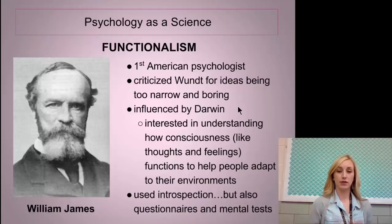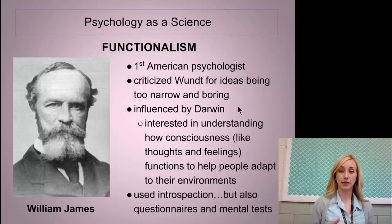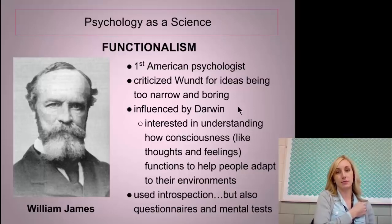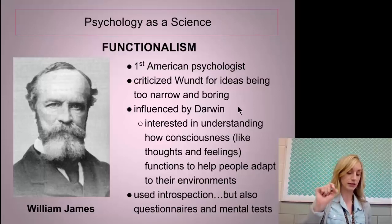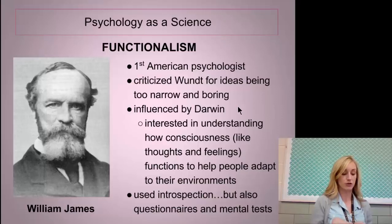As psychology developed more, they came up with functionalism — another big perspective. William James was the first American psychologist. He criticized Wundt for his ideas being too narrow and boring. He was influenced by Darwin and used introspection, as well as questionnaires and mental tests. With functionalism, he wanted to look at the function of the parts of the brain, not just what they are and how they are related. There is some controversy over whether William James or G. Stanley Hall had the first real research lab, as James's lab was thought to be a demonstration lab for students.